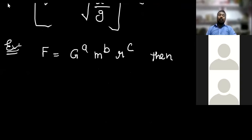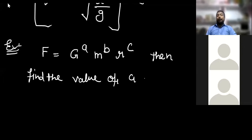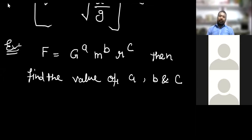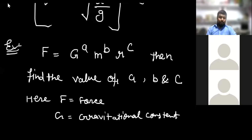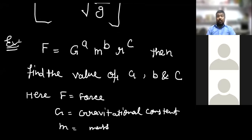Let us see another example for better clarity. Suppose F = G^A · M^B · R^C is given, where F is force, G is the gravitational constant, M is mass, and R is distance. Find the values of A, B, and C.